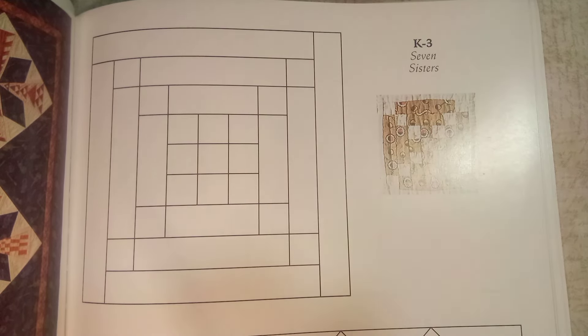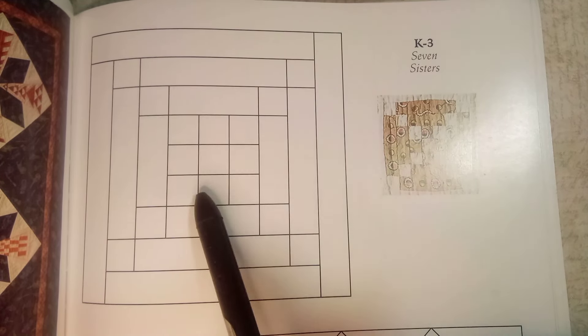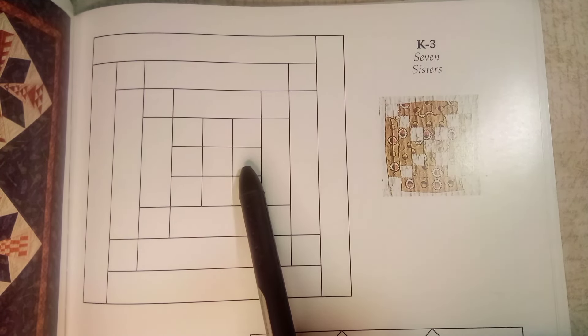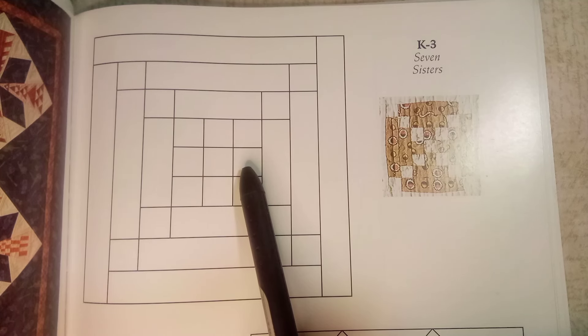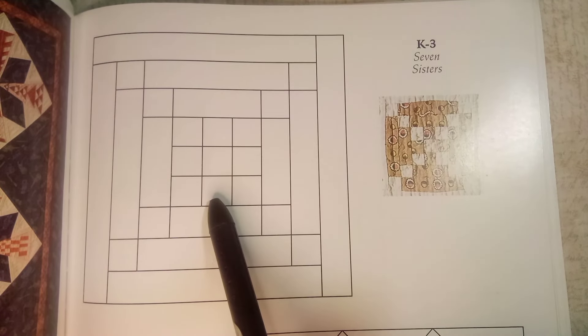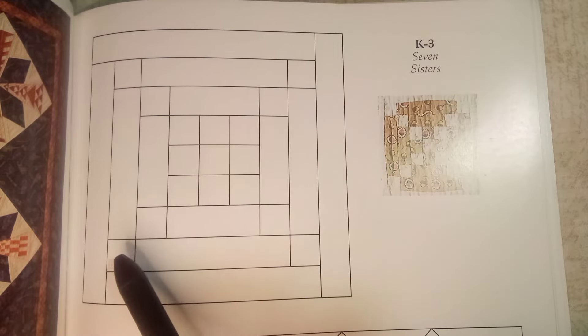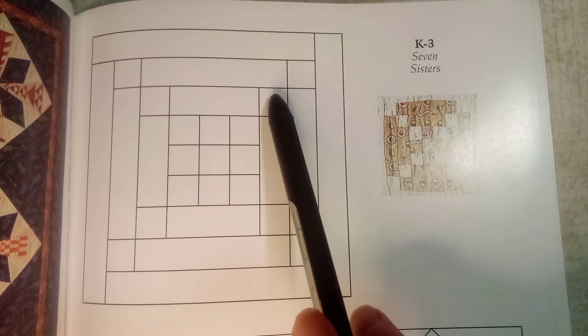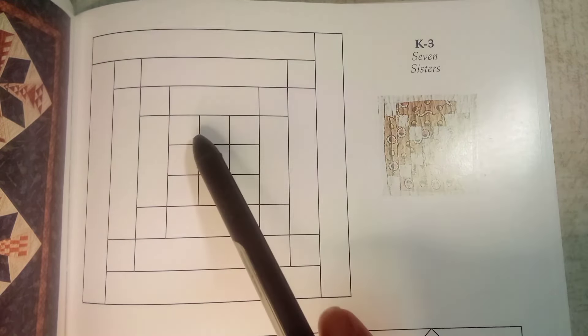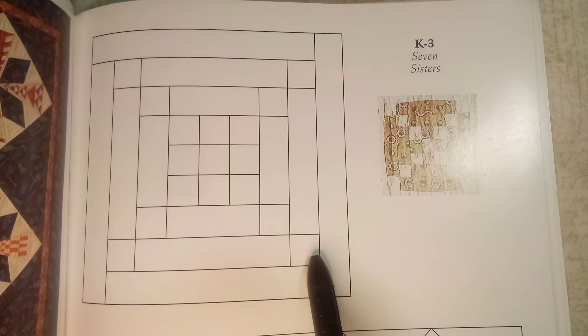When we look at the center here, we are going to need four of the center squares out of the main focus fabric cut at one inch. And then out of our background, we're going to be needing fourteen squares cut at one inch out of the background fabric.